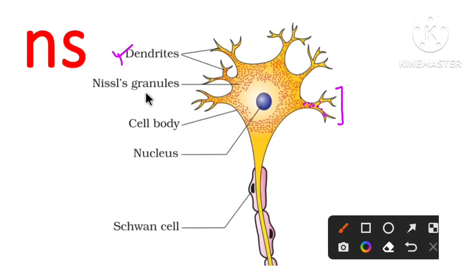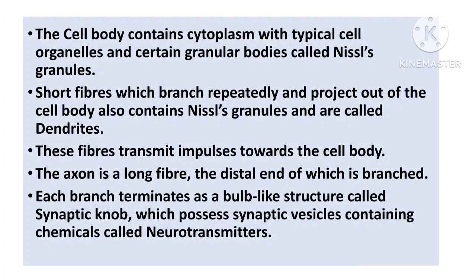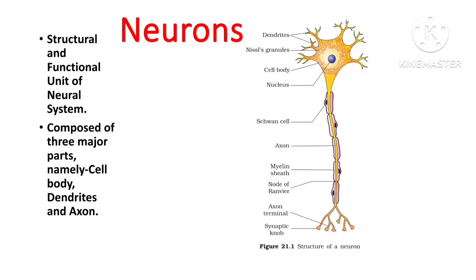The Nissl granules are present in the dendrites as well. These fibers transmit impulses towards the cell body — these fibers are called dendrites. The dendrites receive the impulse and transmit it to the cell body. The axon is a long fiber structure, and the distal end of the axon is branched, as we can see in the structure.